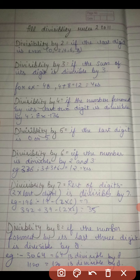Now divisibility by 4. If the number formed by its last 2 digits is divisible by 4, then the full number is divisible by 4. You can take an example of 136. 36 comes on the table of 4. Revise the table of 4.